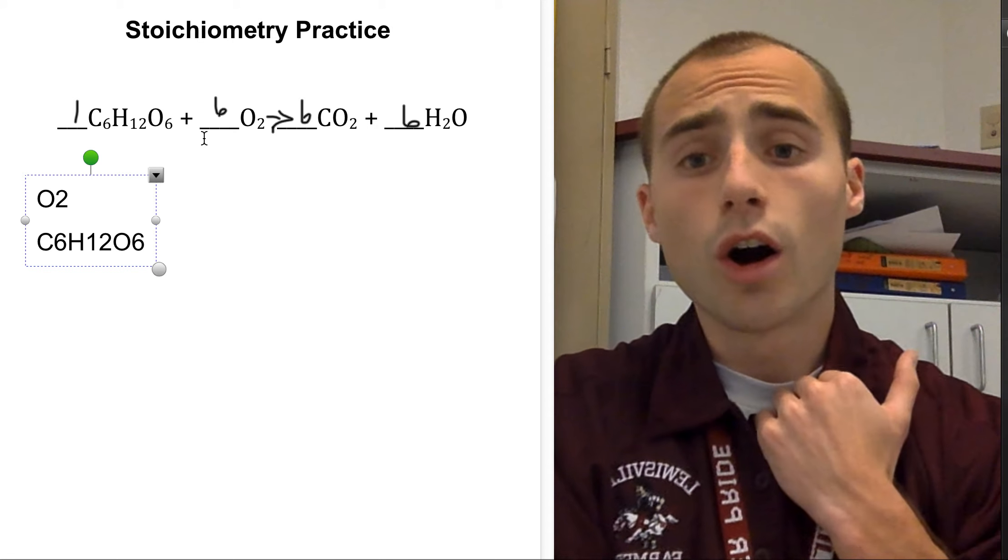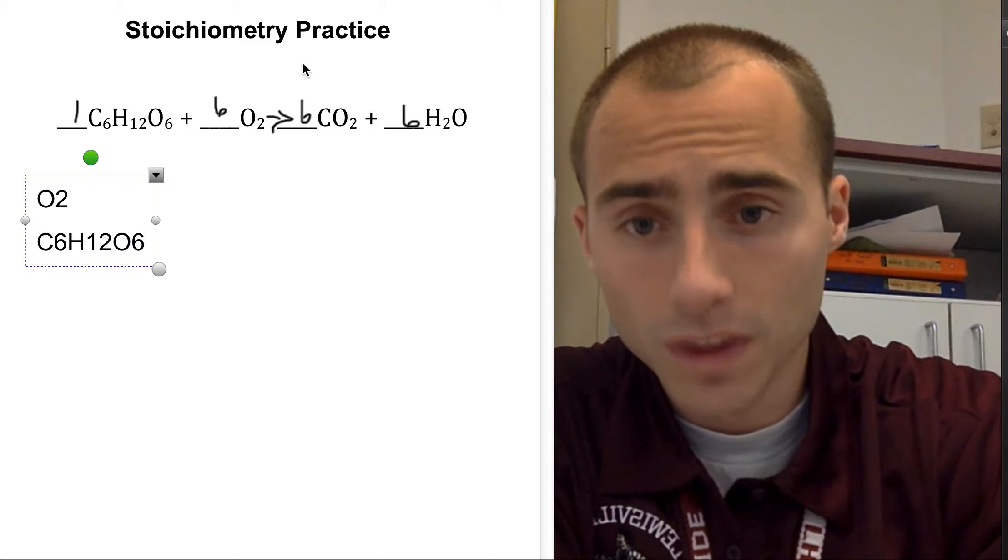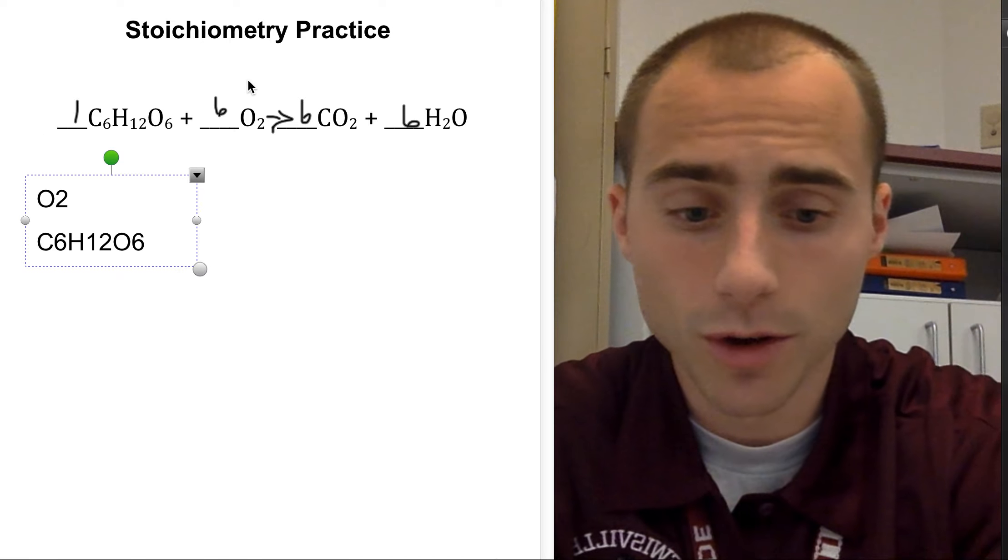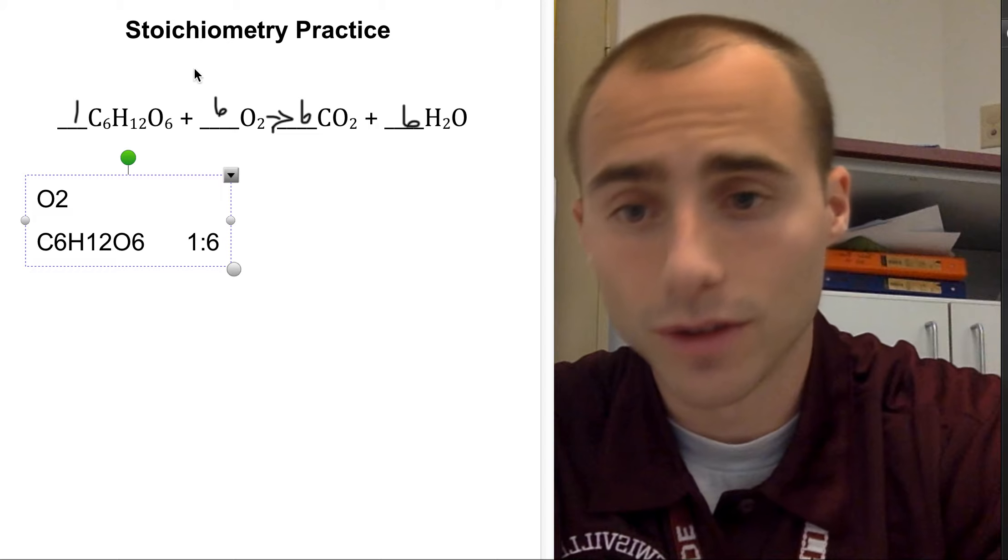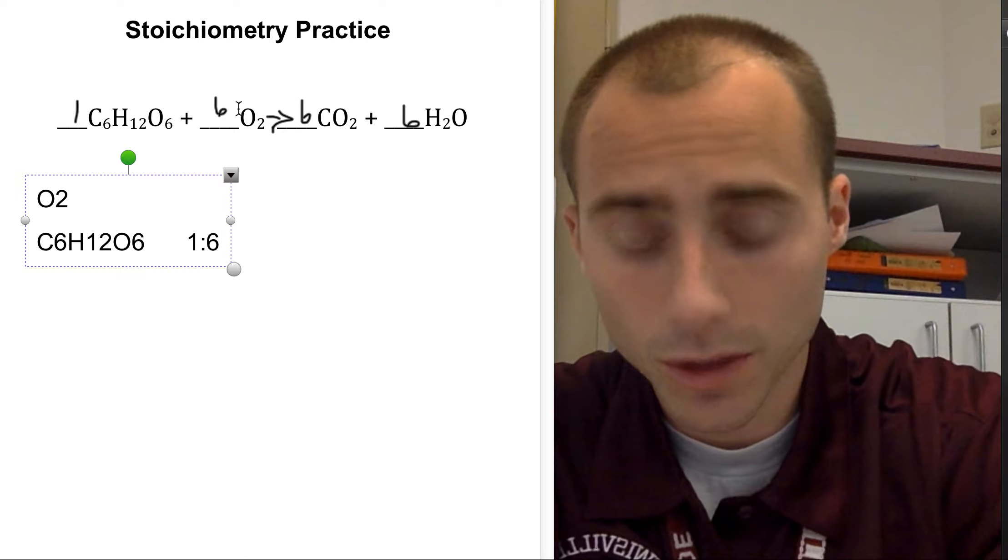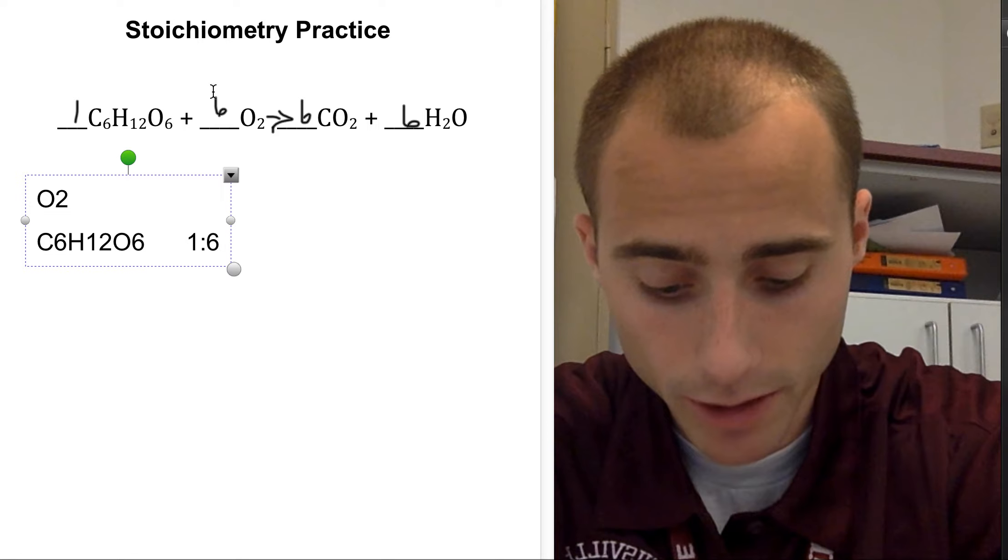So what do we do? All you do is set up a ratio using the first reactant you see with the second reactant you see. So the ratio would be one glucose for every six oxygens. First element or compound with the second element or compound.